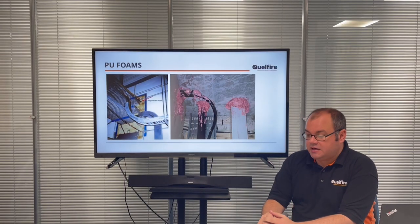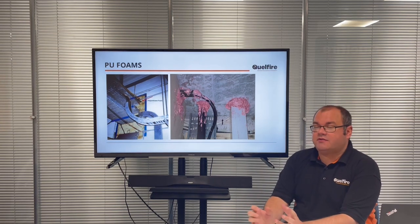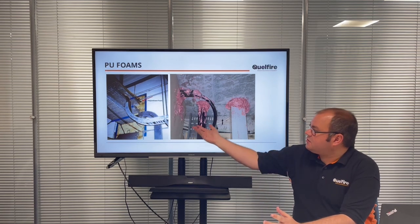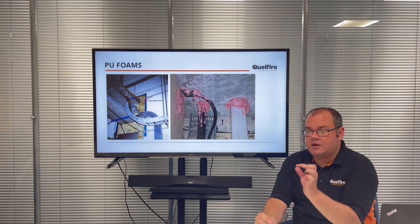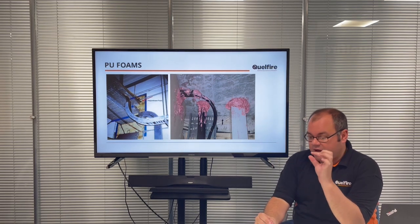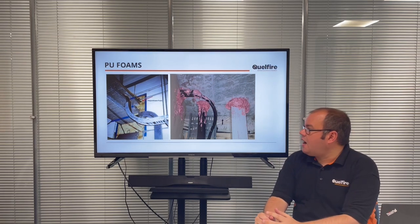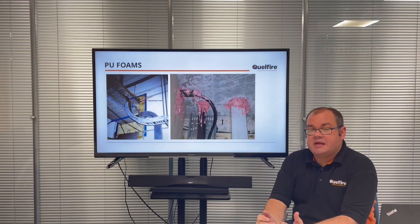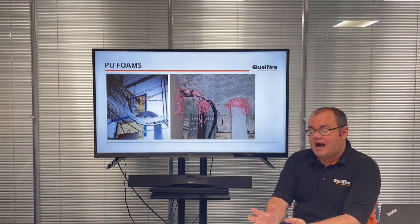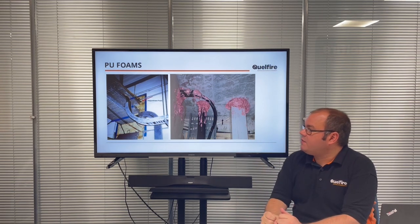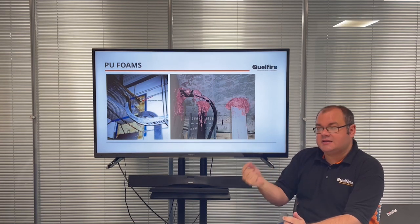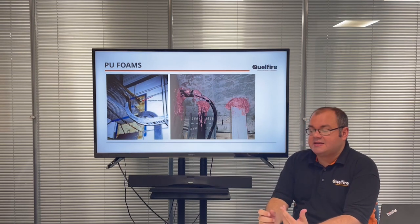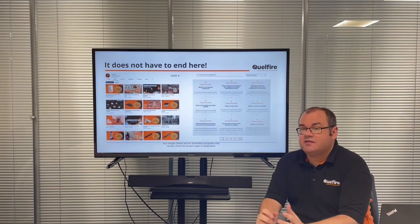One question we get asked — thankfully not too much anymore — is: can we use PU foams or fire-rated foams around service penetrations? The simple answer is no, you cannot. These types of foams have generally been tested for very small linear gaps between usually concrete and concrete — typically 10 mm or less. The problem is people are generally just reading product data sheets or labels and not actually reading the test evidence. These PU foams would typically have been tested to BS 476 or BSEN 1366 part 4, and it's that part 4 that should give it away — that's a linear gap test. When we're talking about service penetrations it's BSEN 1366 part 3, so make sure you're using a product that's been tested for a service penetration.